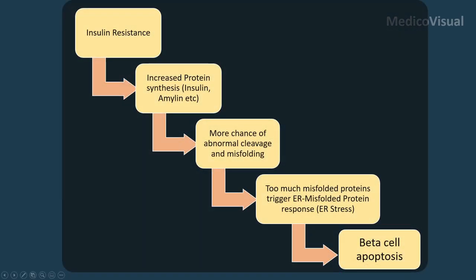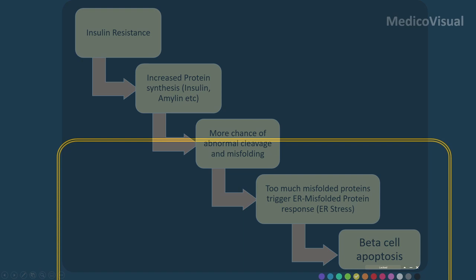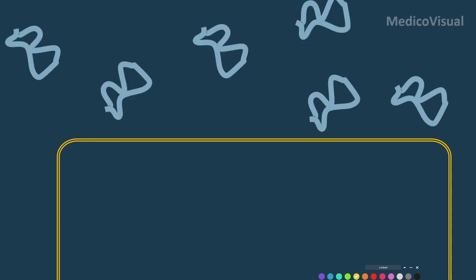If there are lots of misfolded proteins due to overwork, many cells will die through apoptosis. This is how beta cell overwork leads to beta cell dysfunction and ultimately beta cell failure through destruction. Also, some misfolded proteins may slip through the ER's misfolded protein detection system and be secreted out of the cell.